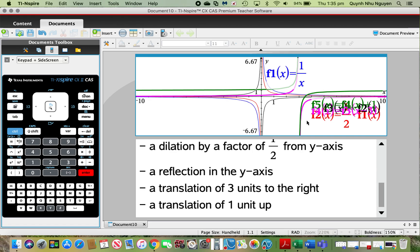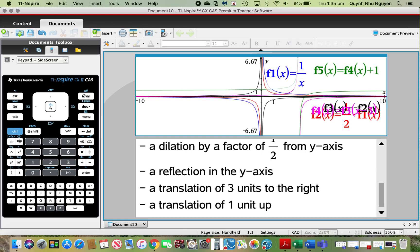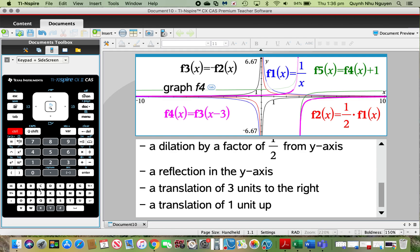So once you've done that, in order to get the equation out, you need to open up a calculator page, and we're just going to use the variable function and call it out. The reason you need to do that is because, as you can see on our graph page, our f5 is simply f4 plus 1. You don't really know what the equation is. So in order to know the exact equation of our transformed function, I'm going to open my calculator page.